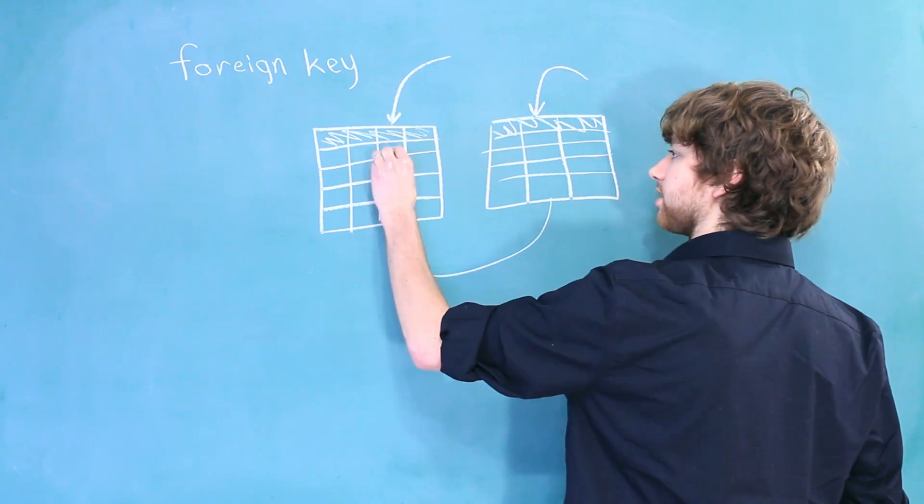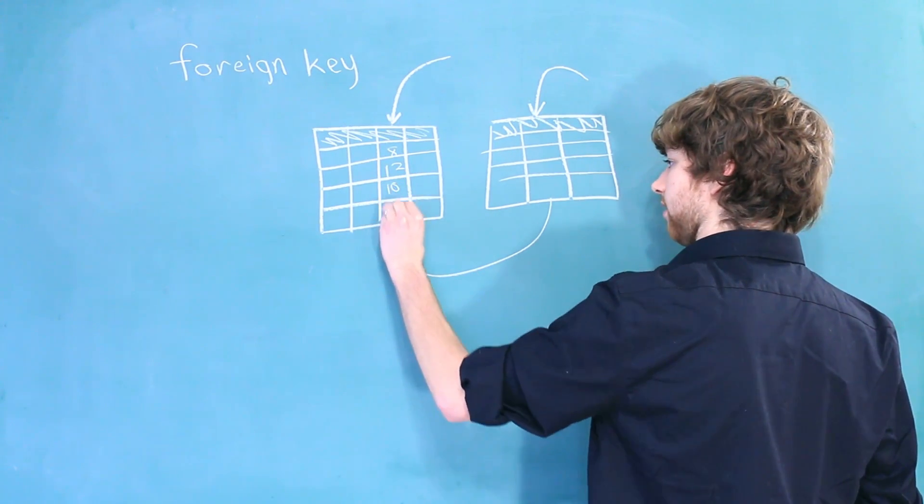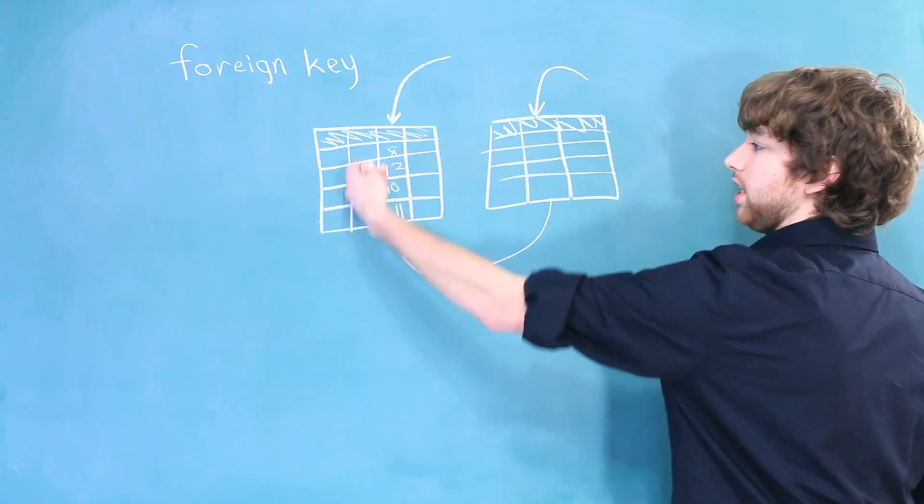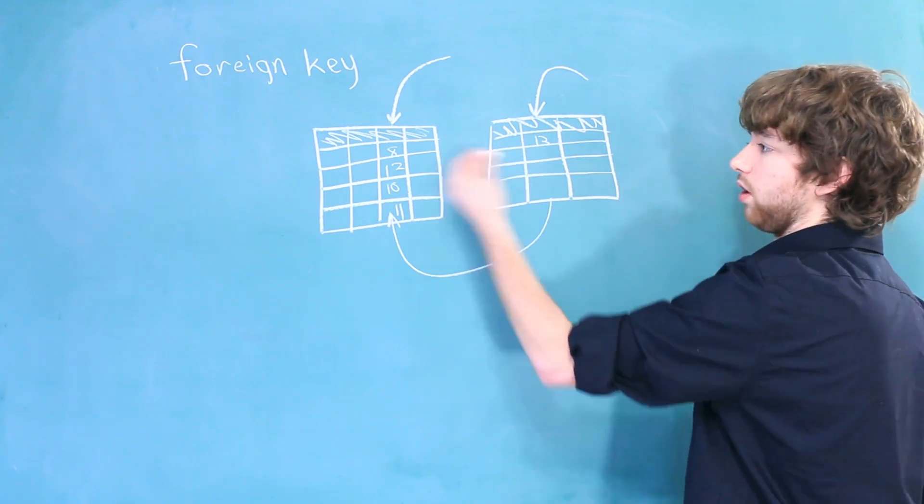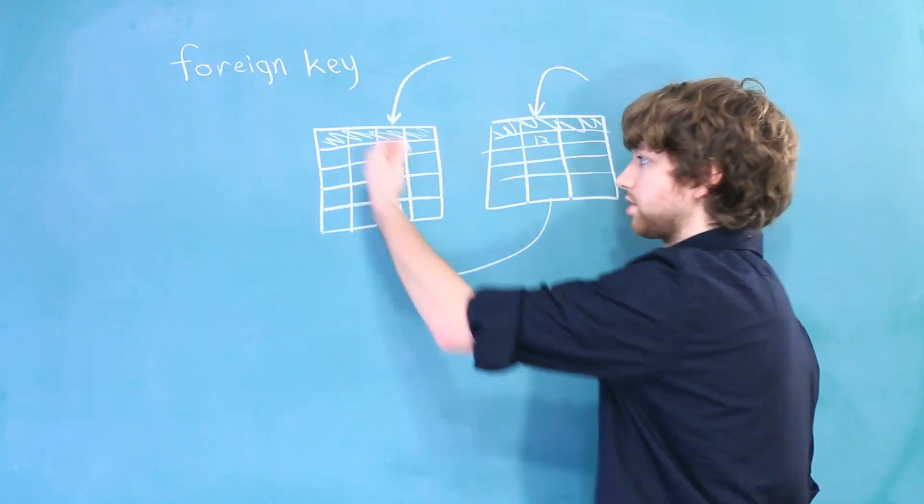That means every single row inside of this table has to be a value inside of this column. So for example, let's say this is 8, 12, 10, and 11. The accepted values here would be any of these, but 13 would not work because it's not in this table's column.